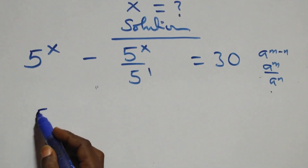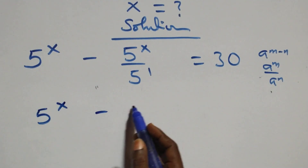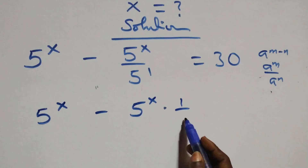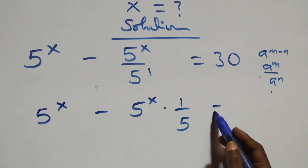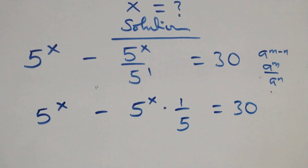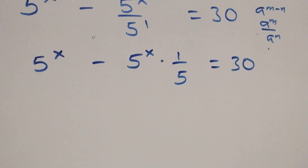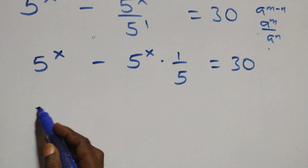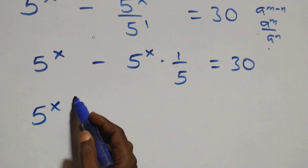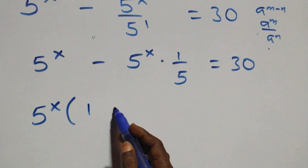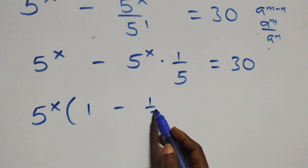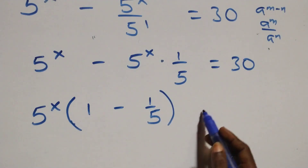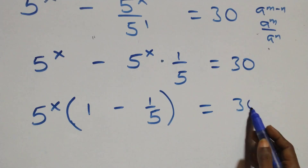This is the same thing as 5 raised to power x times 1 over 5 raised to power 1, which is 5, equals to 30 on this side. At this, 5 raised to power x is common, so we factor it out and we have 5 raised to power x into bracket 1 minus 1 over 5, close bracket, equals to 30 on this side.